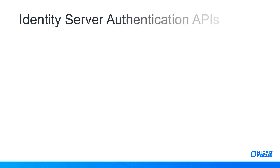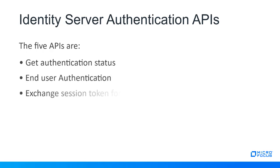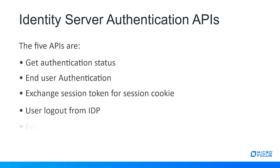Now that you have understood the authentication APIs, let us see what the five different authentication APIs are: Get authentication status, End user authentication, Exchange session token for session cookie, User logout from IDP, and Fetch all the configured contracts.